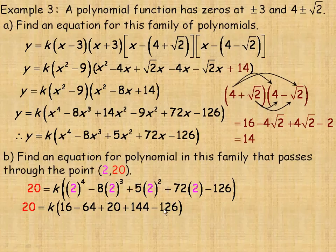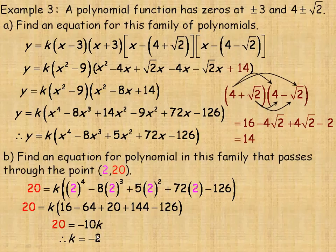Substituting k equals negative 2, the equation for this specific member of the family that passes through (2, 20) is y equals negative 2 times (x to the 4th minus 8x cubed plus 5x squared plus 72x minus 126). You can also expand the negative 2 through, and the equation would look like that.